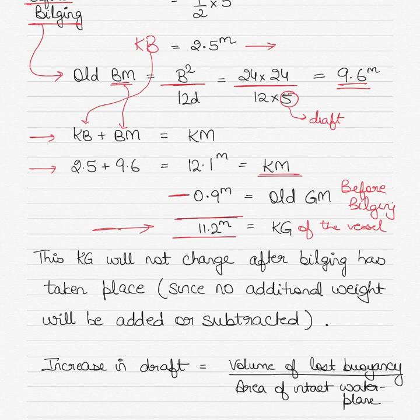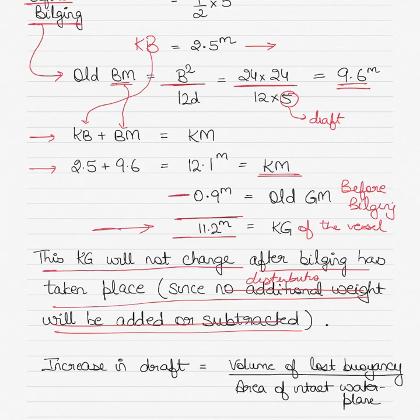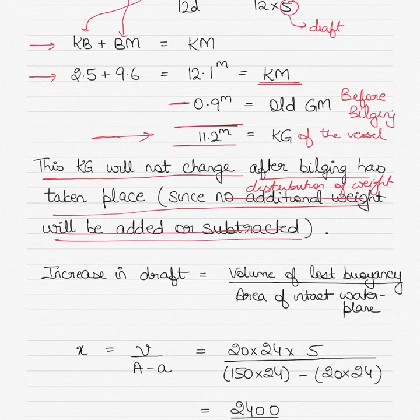I will not say 'before bilging' for KG because KG will remain unchanged. KG is nothing but the distance between the center of gravity and the keel of the vessel. KG remains unchanged whether before bilging or after bilging because there is no distribution of weight — no additional weight added or subtracted — so KG remains the same.